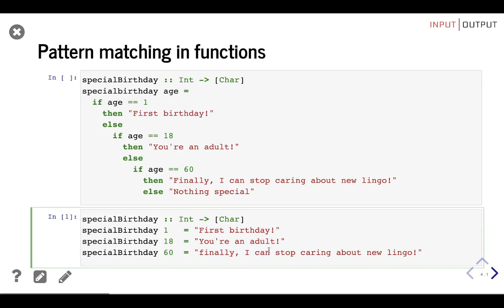When presented with code like this, Haskell will attempt to match the value of `h` with the first definition. If `h` is not 1, it will try the second definition; if it's not 18, it will try the third, and so on until the value matches one of the definitions. And of course there's a huge problem — what happens if we pass a number different from the ones defined, like 29 for example?